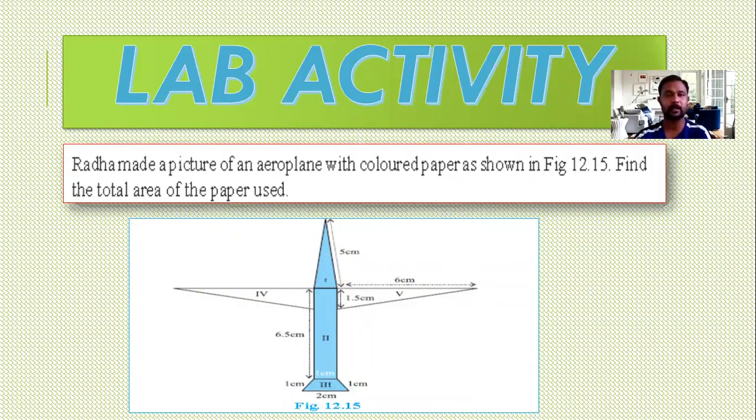You actually analyze the figure. The figure of an aeroplane is given. That figure is partitioned, divided into five parts which are shown in Roman letters. See the first part.